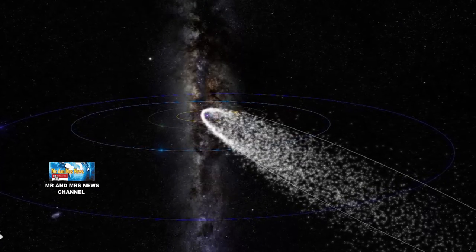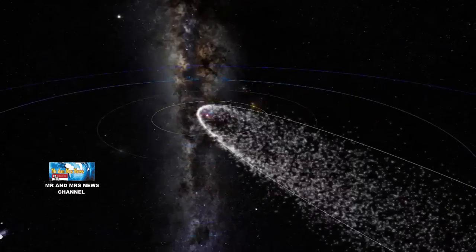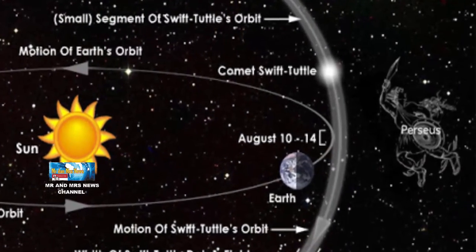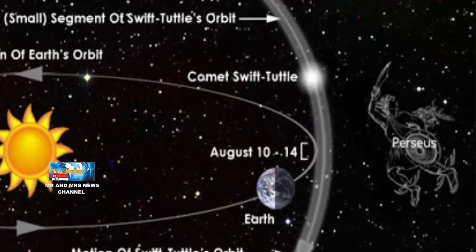Menurut NASA, puncak hujan meteor Perseid pada pertengahan Agustus memuncak di tahun ini pada tanggal 11, 12, dan 13 Agustus 2021.